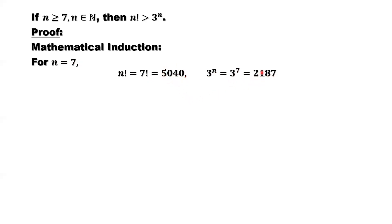Comparing the two numbers, we can easily see the result. 7 factorial is bigger than 3 to the power 7.